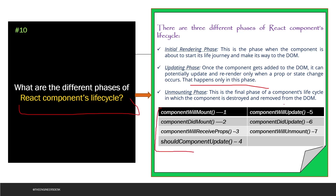Interviewers sometimes also ask about the specific lifecycle methods. The three phases are mounting, updating, and unmounting. The methods include: componentWillMount, componentDidMount, componentWillReceiveProps, shouldComponentUpdate, componentWillUpdate, componentDidUpdate, and componentWillUnmount. The first three are mounting phase methods, the middle three are updating phase methods, and the last is the unmounting phase method.